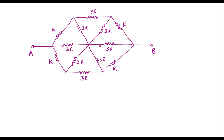So, this is the given circuit. Here we can see that we have 3R, 3R, and 3R connected in delta fashion. I will try to convert this into star fashion. The equivalent star values will appear here — one resistor will appear here, another resistor will appear here, and another resistor will appear here.